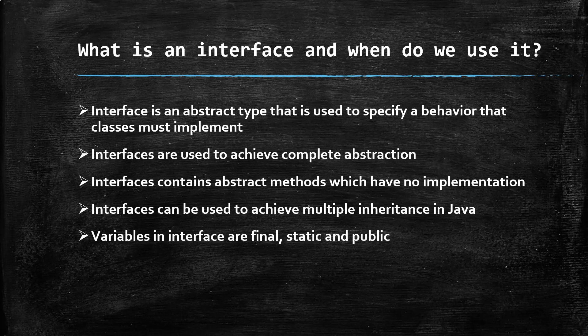Variables in an interface are final, static, and public by default — public so that implementing classes can access them. Interfaces cannot be instantiated, meaning you cannot create an object of an interface. These are all the points you can mention when asked about interfaces in an interview.